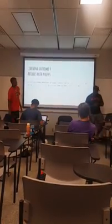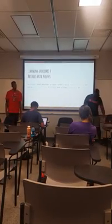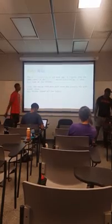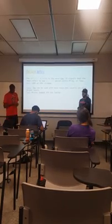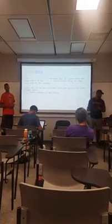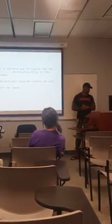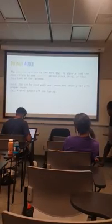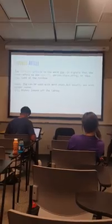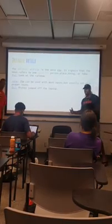All right, learning outcome number four: article nouns. They show whether something is specific or a general thing. Your definite articles use 'the,' which is for specific things — so like 'the chair,' 'the boy,' a specific thing. For example, 'Look at the rainbow' — it's one specific rainbow, not multiple. 'The' can be used with most nouns, but usually not with proper nouns. So 'Mickey jumped off the laptop' — you don't put 'the' in front of Mickey because it's a specific person. Everybody knows what it is.